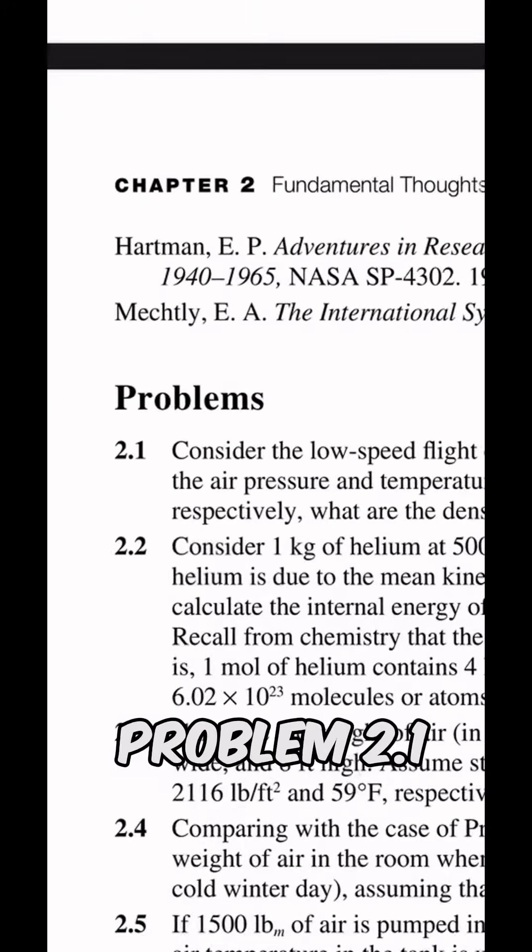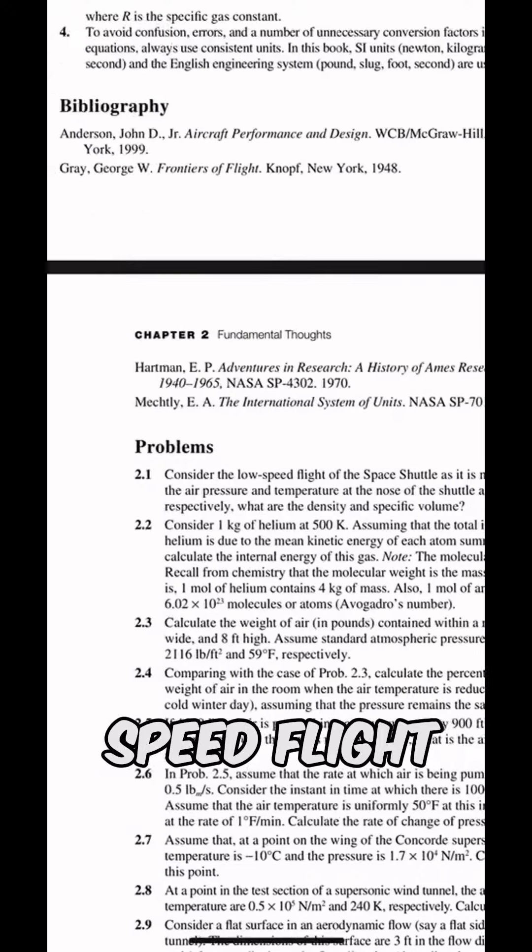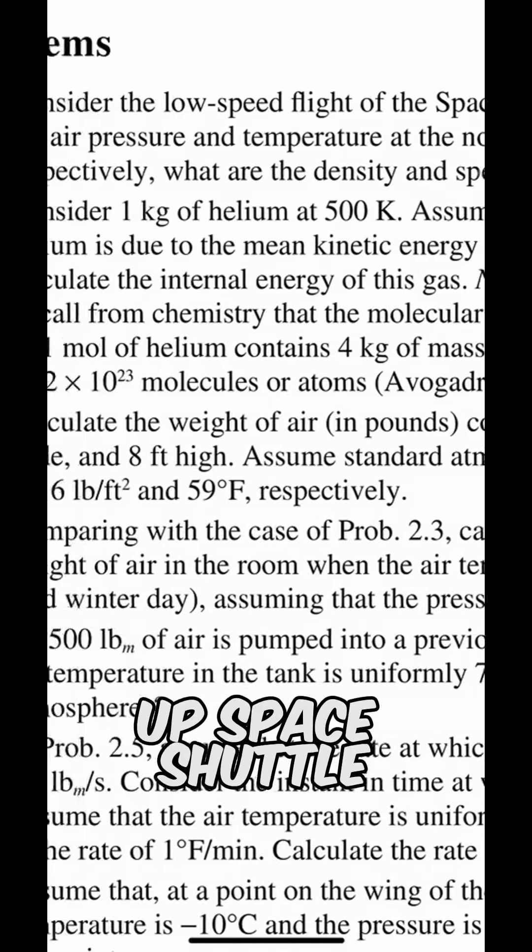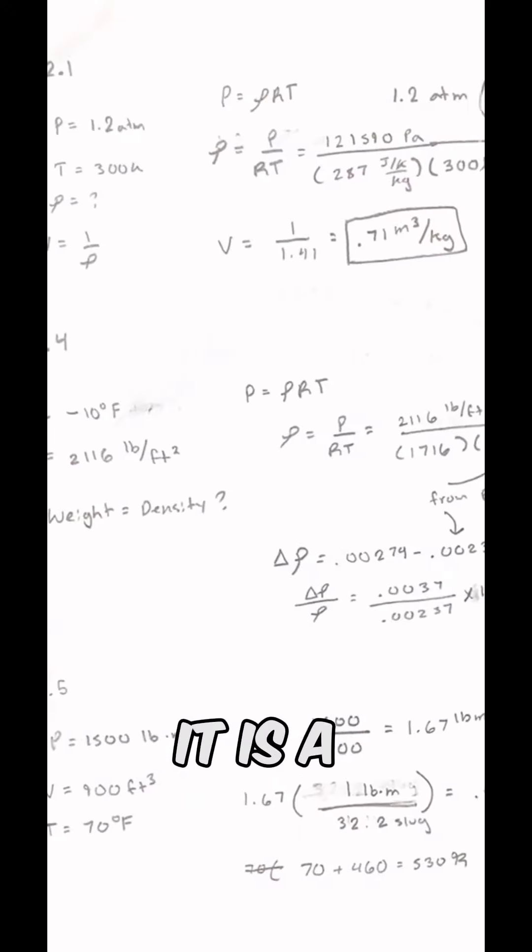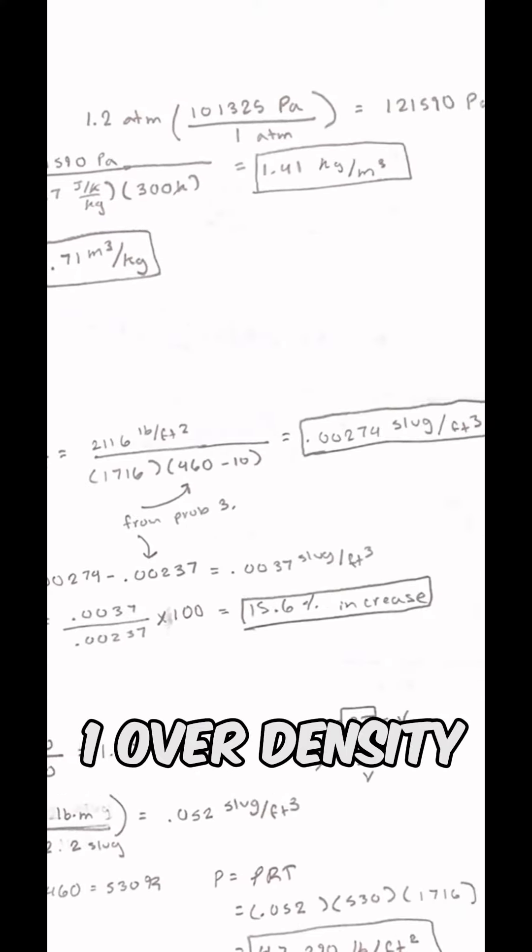So when we look at problem 2.1, the question is asking where the density and specific volume of the low-speed flight of a particularly made-up space shuttle. Based on my work, it is a simple use of the ideal gas laws to find the specific volume ratio, which is 1 over density.